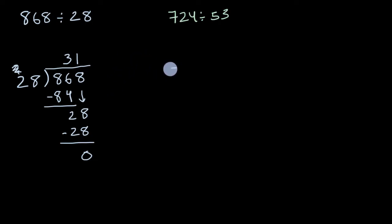All right, so we have 53. We're trying to figure out how many times does it go into 724. So first, estimating how many times does 53 go into 72. Well, it goes at least once. It doesn't go twice because that would be over 100. So let me just put a one here. One times 53 is 53.